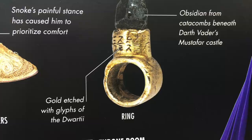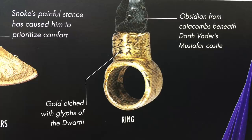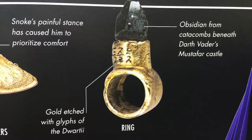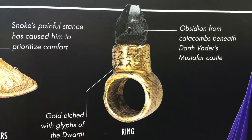I'm talking about Snoke's ring. The Visual Dictionary points out two important pieces of information: one connecting the ring to Sidious and the other making a connection to Vader. We learn that the band is made of gold and is etched with glyphs of the ancient Duartei, while the stone that sits atop is obsidian originating from the catacombs beneath Vader's castle on Mustafar.